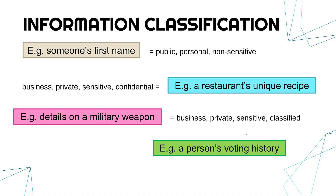A person's voting history is more complicated. It is private — what you voted for should be private. It's personal, as it may link to someone's name or address. It's sensitive because people usually don't want others knowing who they voted for in elections. You could argue it would be treated as confidential, but personally I think nobody should know your voting history, whereas confidential usually suggests a few people are allowed to see it — so I'd label voting history as just private, personal, and sensitive.